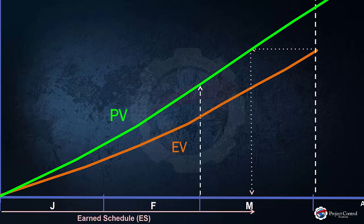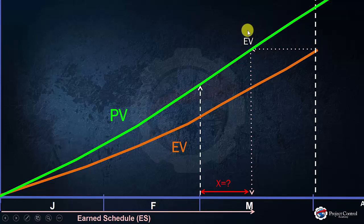By zooming in, here is our graph. In this graph, we want to determine X — the fraction of time where the Earned Schedule is falling. To determine X, let's first evaluate what data we have available. I know I have my Earned Value, and when I project it onto my Planned Value curve, that's where Earned Value and Planned Value are the same. So at this point, my Earned Value equals my Planned Value.